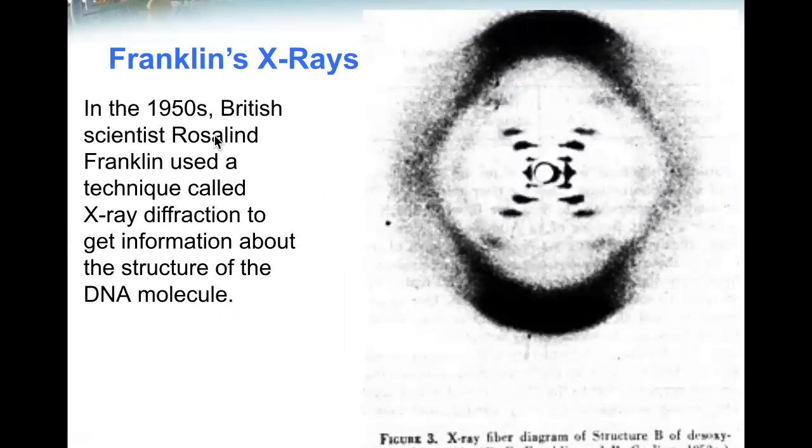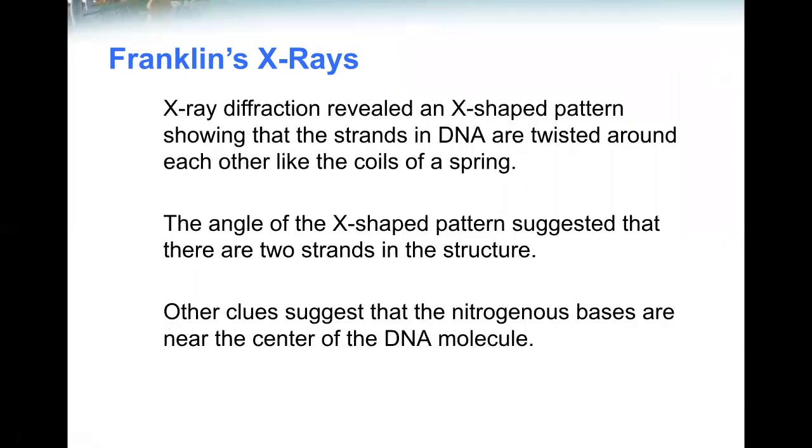In the 1950s, British scientist Rosalind Franklin used a technique called X-ray diffraction to get information about the structure of the DNA molecule. X-ray diffraction revealed an X-shaped pattern showing that the strands in DNA are twisted around each other like the coils of a spring. The angle of the X-shaped pattern suggested that there are two strands in the structure. Other clues suggested that the nitrogenous bases are near the center of the DNA molecule.